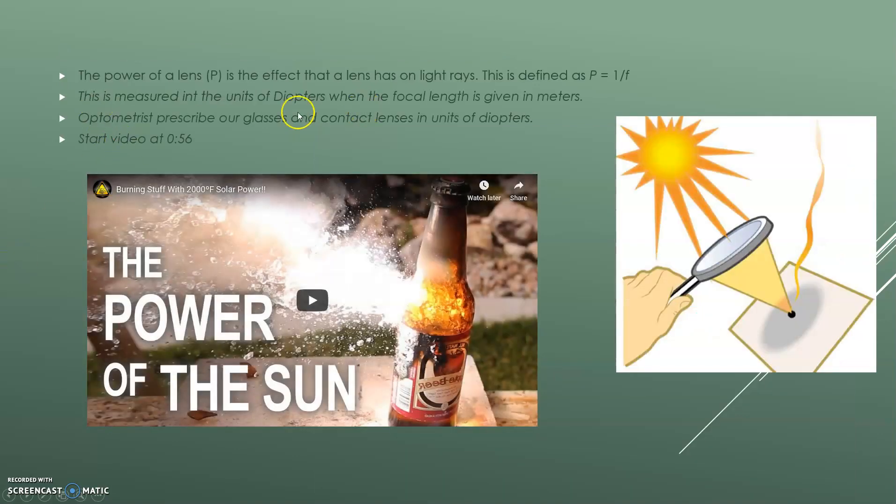The power of a lens is the effect that the lens has on light rays. And this is defined as one divided by focal length. So it's measured in the units of diopters when the focal length is given in meters. So it has to be meters in order for you to calculate into diopters correctly. Optometrists prescribe our glasses and our contact lenses in units of diopters, which I didn't know. I thought that was kind of cool because I never really understood from wearing glasses my whole life, what the prescription was he was giving me and now I can understand a little bit better.